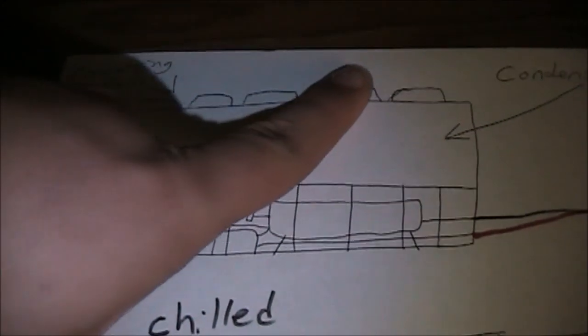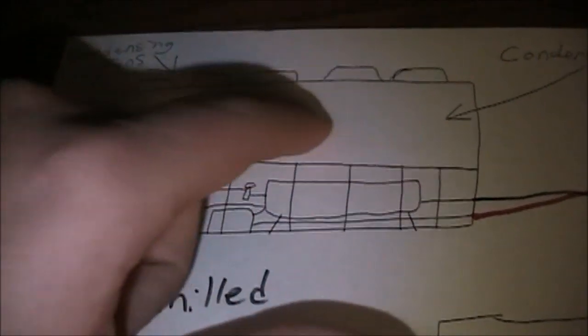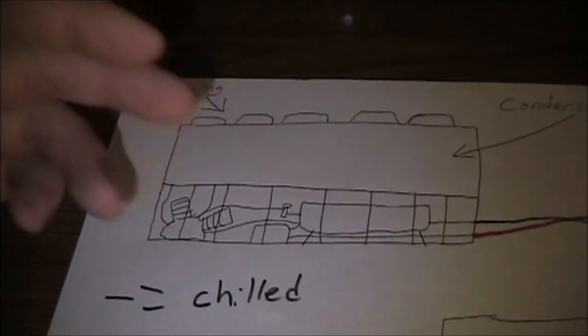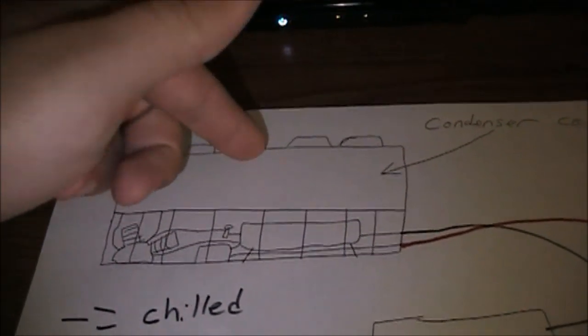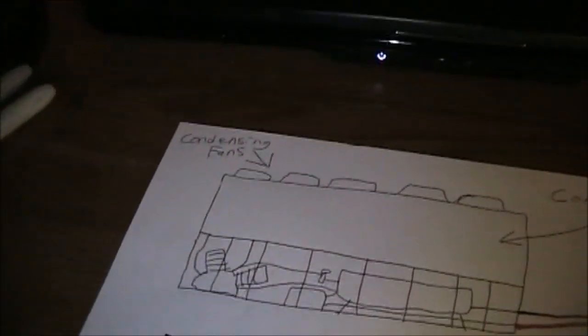It has all these condensing fans all right in here and all this right here is the condensing coil. It's air cooled so air flows through the condenser coil and then up and out the fans instead of water flowing through it like in the chilled water system.